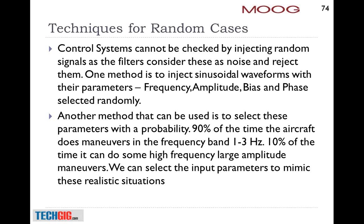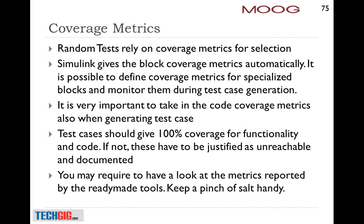Another consideration is how many times and what frequency and amplitude should be used. For the LCA program, we analyzed the LCA flight profile — the way the pilot flies it. We looked at 10 or 15 of the SRTs and found that most of the time it's a very low frequency zone, with higher frequency occurring about 10 percent of the time. So 1 to 3 Hz is about 90 percent. We generate test cases with lower frequency most of the time and additional test cases with higher frequency. If you have a lot of data, you can use simple techniques to come up with realistic numbers.